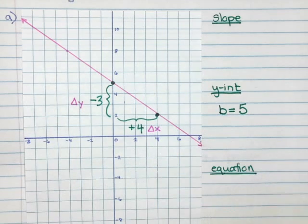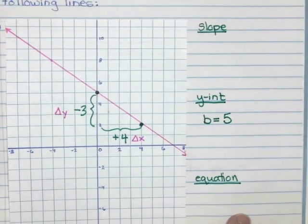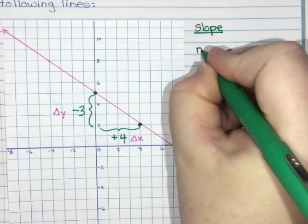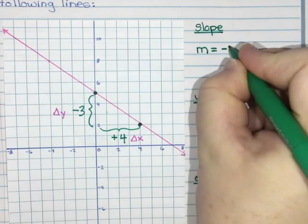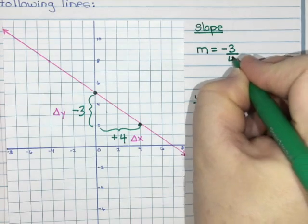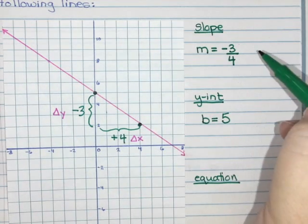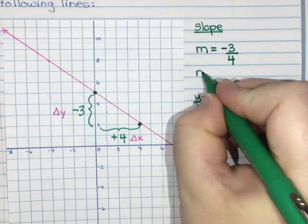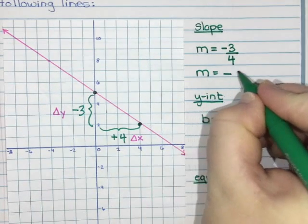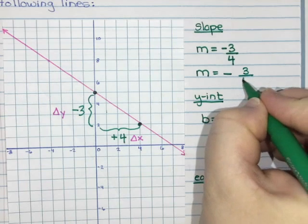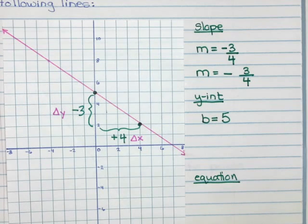So slope is the change in y divided by the change in x, so it is negative three divided by positive four. So my slope is negative three divided by four. Now a negative divided by a positive is a negative, so if you want you can write it with the negative in front of the entire fraction so that it's just negative three over four.